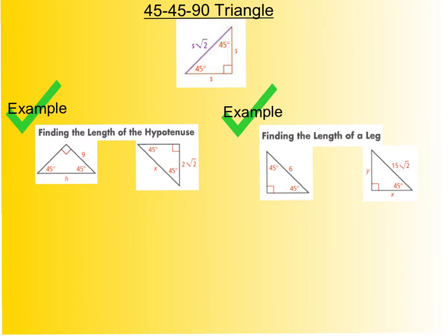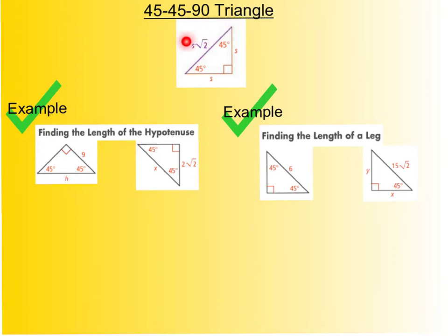The first thing we're going to talk about is a 45-45-90 triangle. We know we have one because of the 90-degree box making it a right triangle, and then our other two angles are each 45 degrees. The pattern it always follows is that the two legs will always be the same length, and if you take that leg length and multiply it by radical 2, that gives you the length of the hypotenuse.